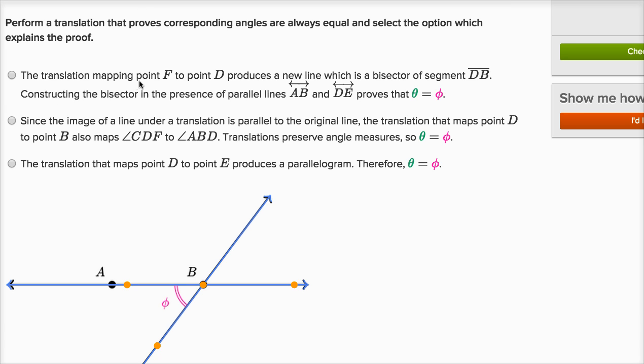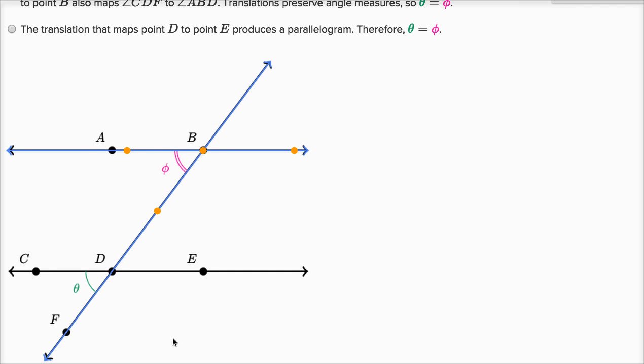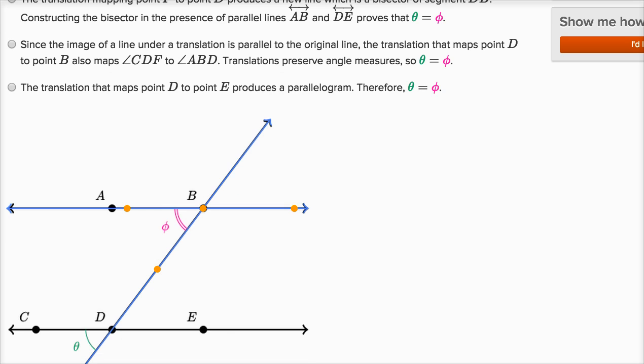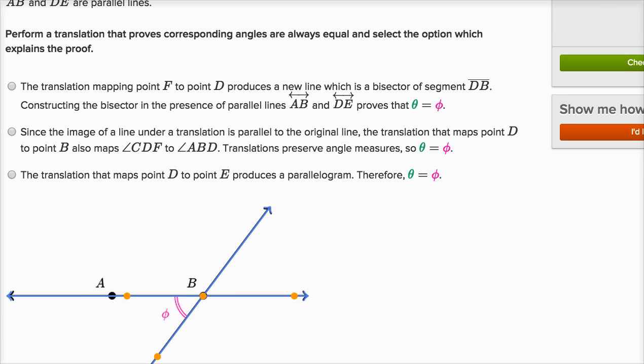The translation mapping point F to point D, so point F to point D, we didn't map point F to point D, so this is already looking suspect. It produces a new line which is a bisector of segment DB. This doesn't seem anything like what I just did, so I'm just going to move on to the next one.